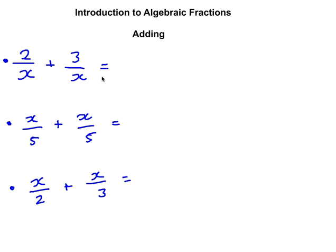The simple idea with algebraic fractions is that we do the same thing that we would do with numbers. For example, 2 over 5 plus 3 over 5, the denominator would stay the same and we'd add the top numbers, and we'd get 5 over 5.